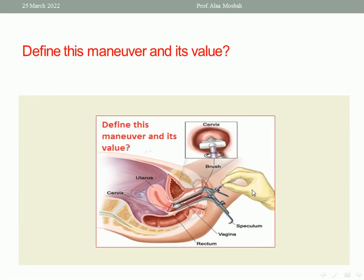Next question: define this maneuver and its value. Look at this picture — here there is a cervical smear using a cytobrush. The cytobrush is placed at the external os, rotated 360 degrees once or twice, then withdrawn and spread on a slide, fixed with fixative, and sent for a Pap test. This is a cervical smear for cytological evaluation, also used for screening of cervical carcinoma and detecting the pre-cancerous lesion cervical intraepithelial neoplasia (CIN).